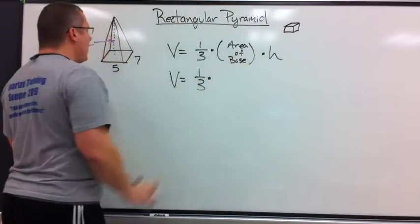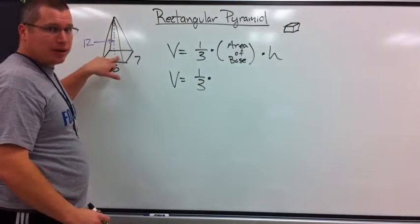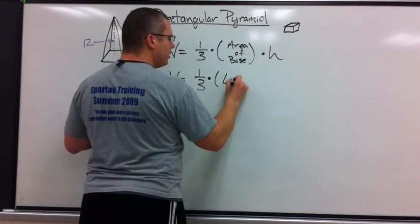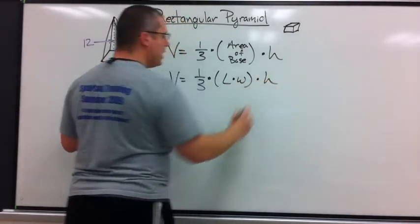Volume equals 1/3. Now it's times area of the base. The base is a rectangle, and yes, squares count as rectangles. Length times width. So what I'm going to do is I'm going to change the formula times length times width, but understanding that this is of the base times the height.